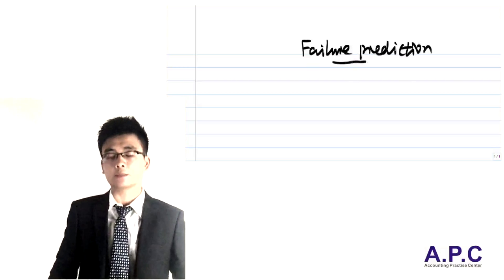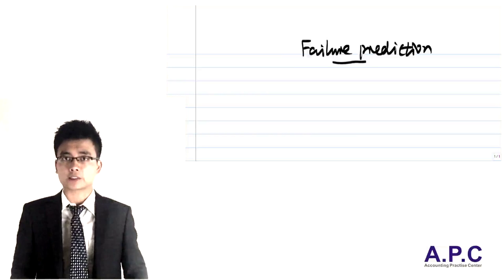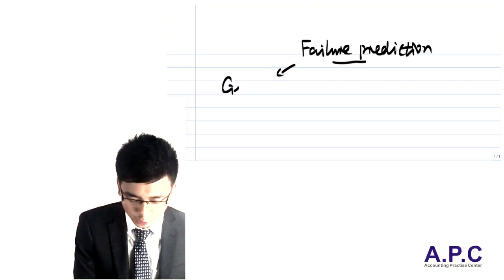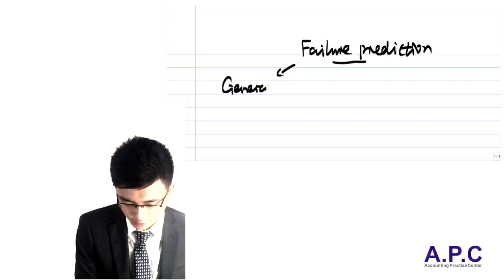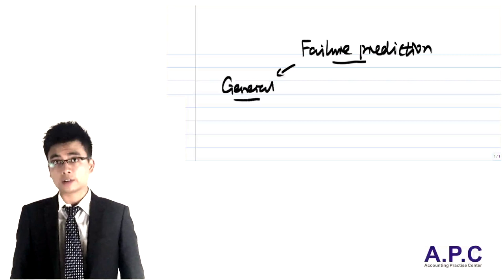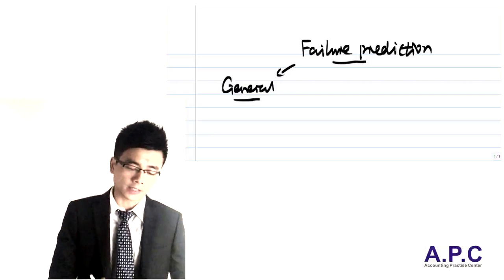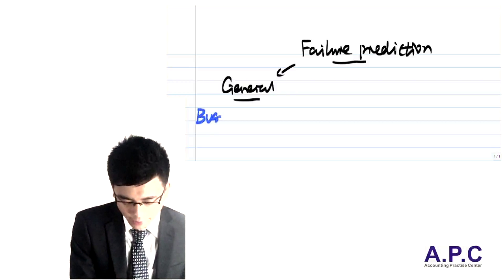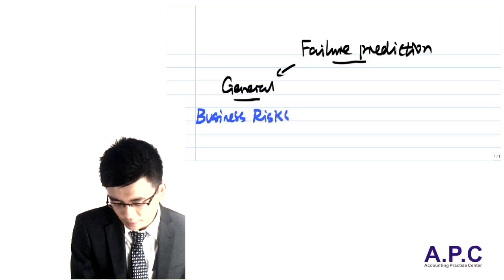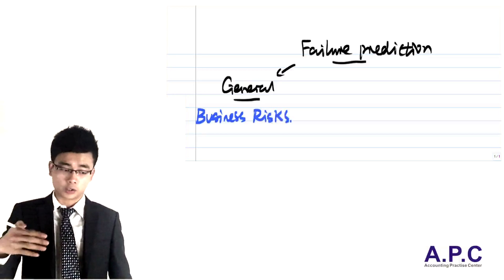The accomplished failure prediction. From that perspective, there are three particular aspects that we're going to look at. Firstly, are there any general factors that may imply that the company would go into trouble? The answer is yes. The idea behind it is that there would be business risks associated with the company, and as a result of that, the company would go wrong.